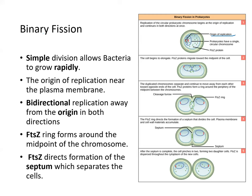The origin of replication for the circular DNA initiates nascent DNA synthesis. FtsZ proteins are involved in this process. After DNA replicates, the cell begins to elongate, and the FtsZ proteins migrate toward the midpoint of the cell. The duplicated chromosomes separate, and an FtsZ ring forms around the midpoint of the cell, causing a cleavage furrow. FtsZ proteins then direct the formation of a septum, which separates the two daughter cells. When the septum is completed, the cell pinches off into two daughter cells.